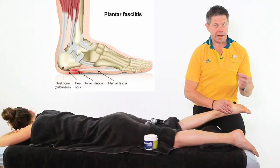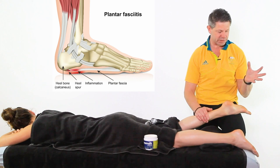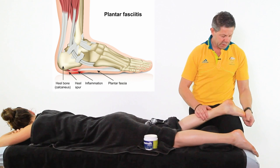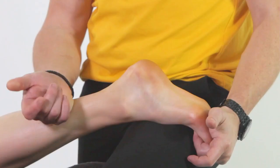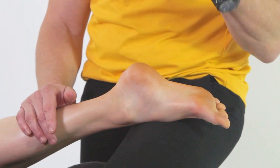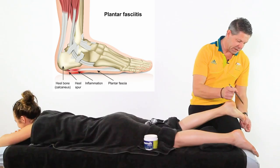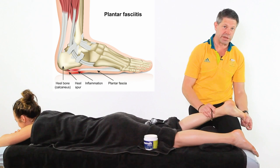Plantar fasciitis affects not just runners but any athlete involved in lower leg loading — weightlifters included. Mon has a very impressive plantar fascia — you can see the outline of the fascia. Pain can occur at the attachment to the calcaneus or anywhere through the plantar fascia tissue. It's important to identify where exactly the sensitivity is.